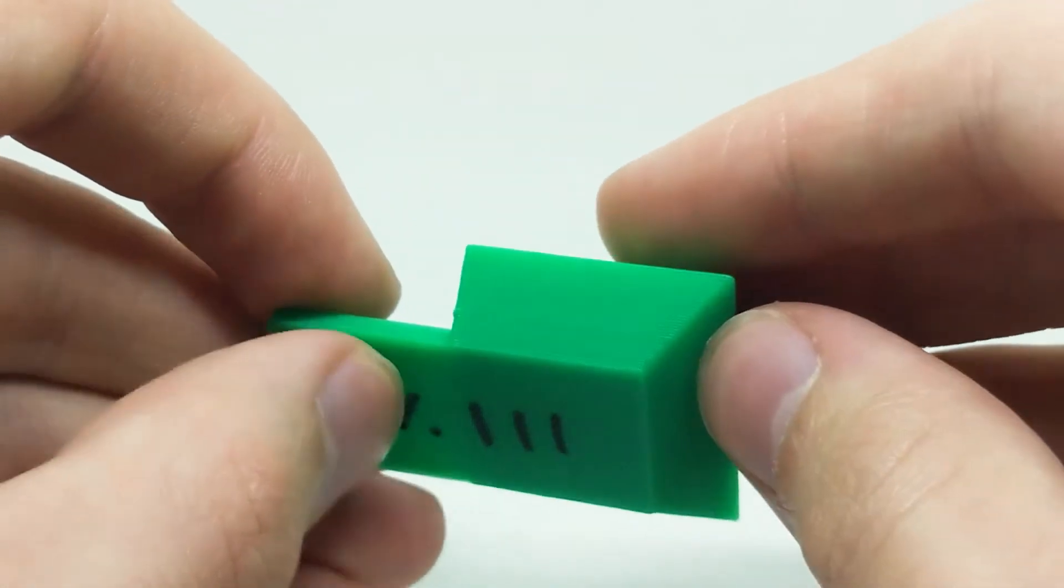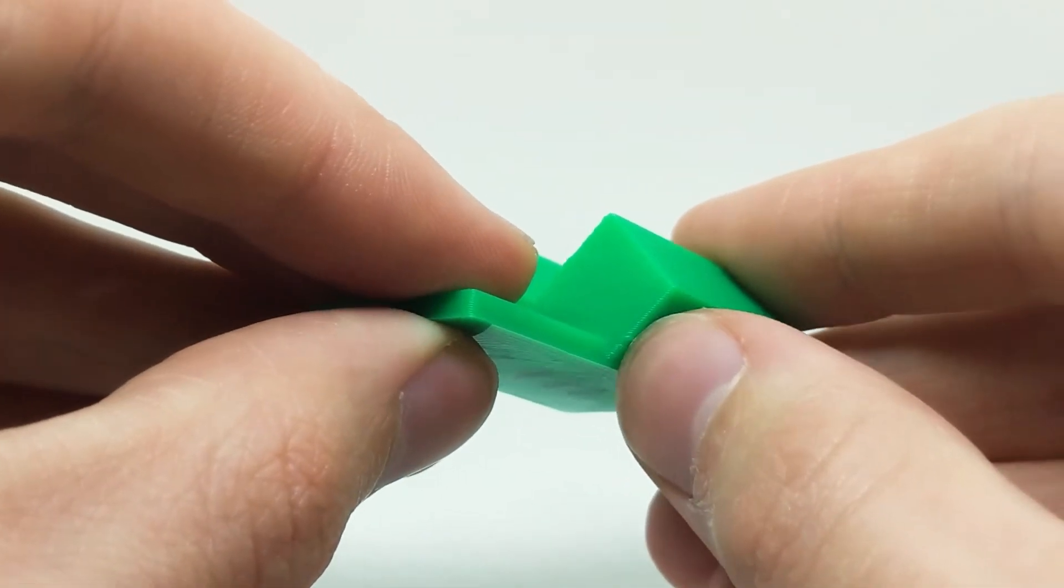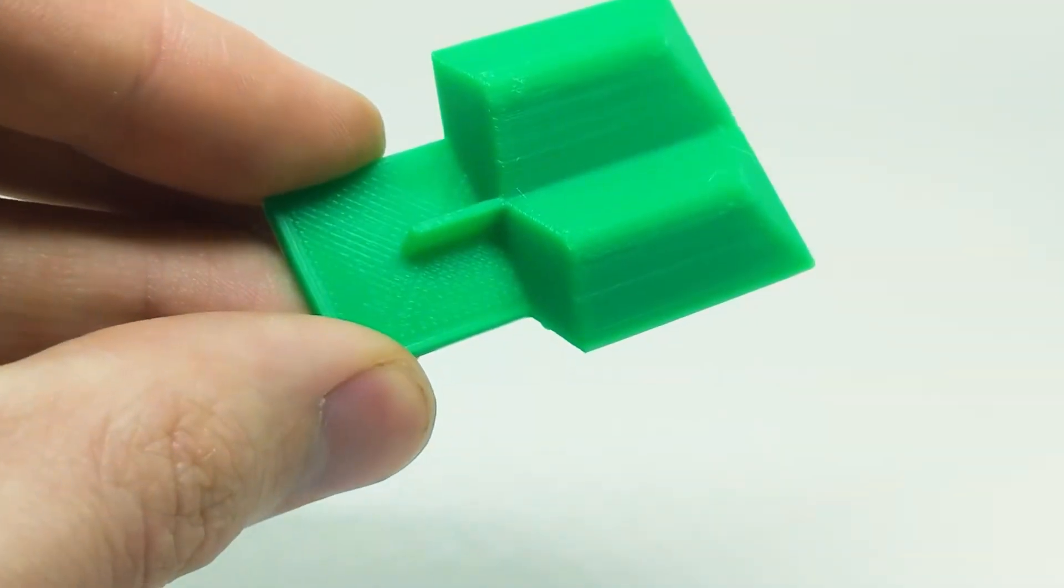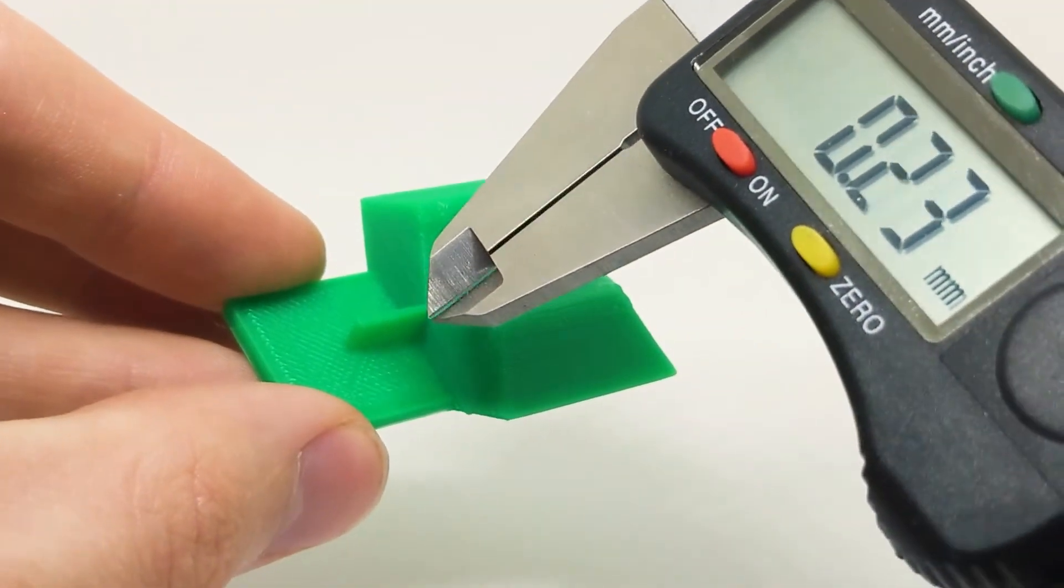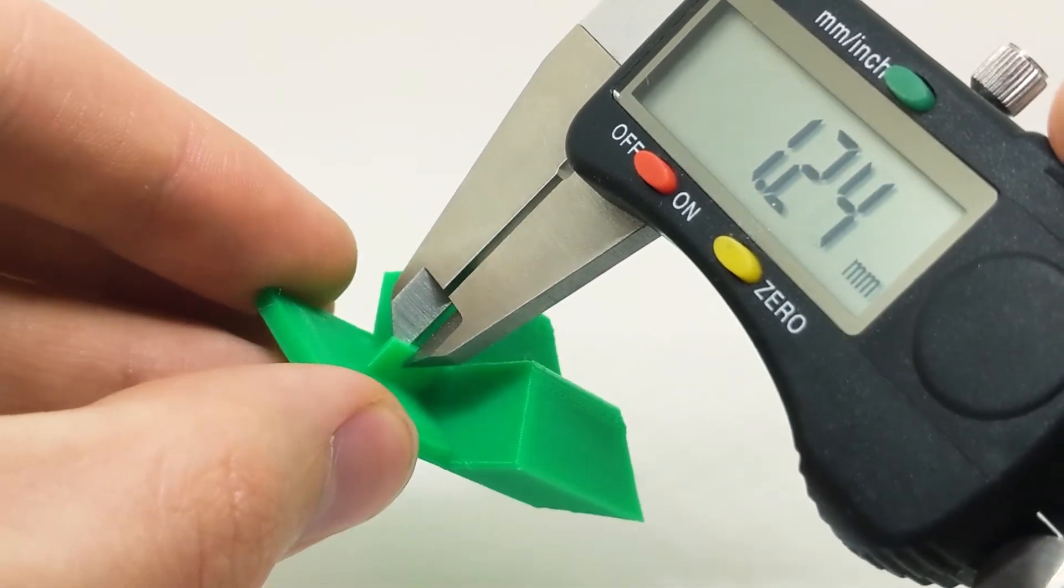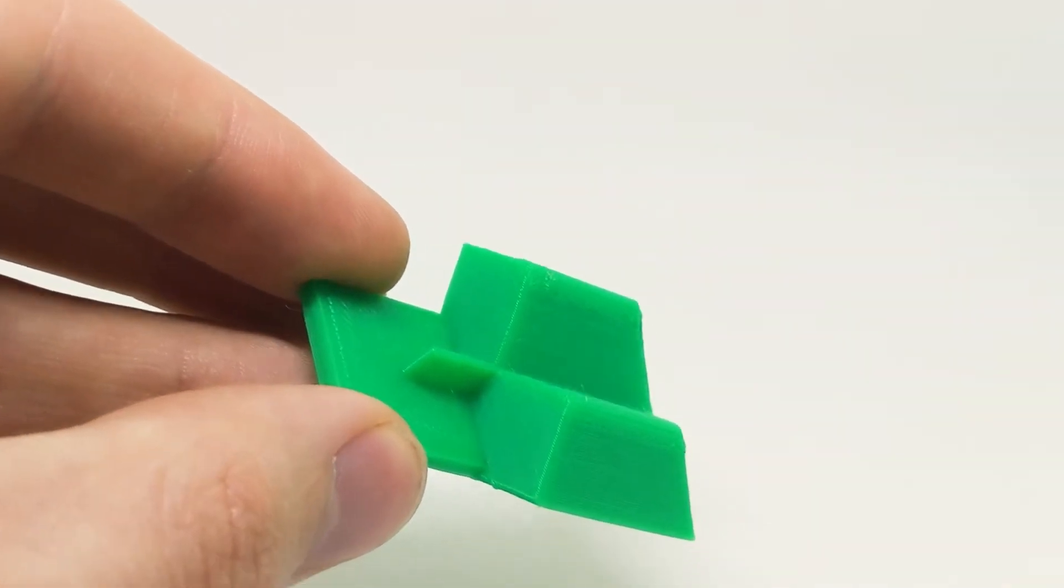The 45 degree overhang printed quite well, except for just this one bulge right there that you can see a little bit. Now I'm going to measure this wall that's meant to be 1mm thick. I'll pull out the calipers, and let's see, it's about 1.25mm, so that's definitely overextruding too.